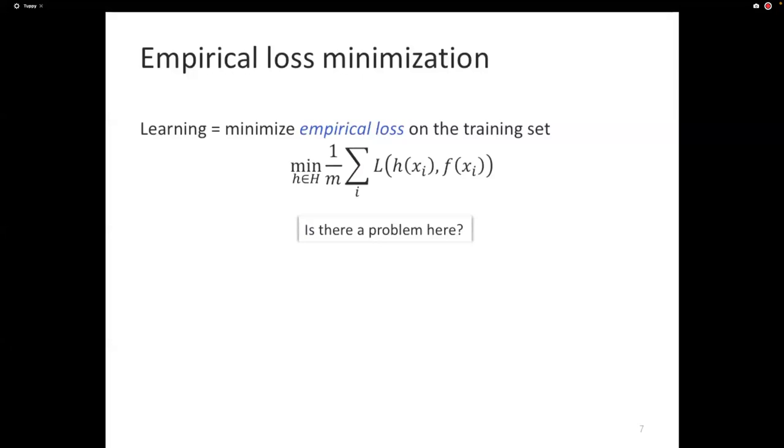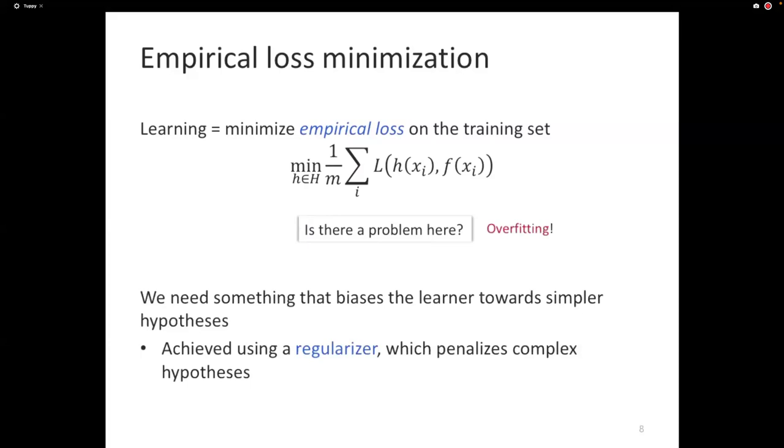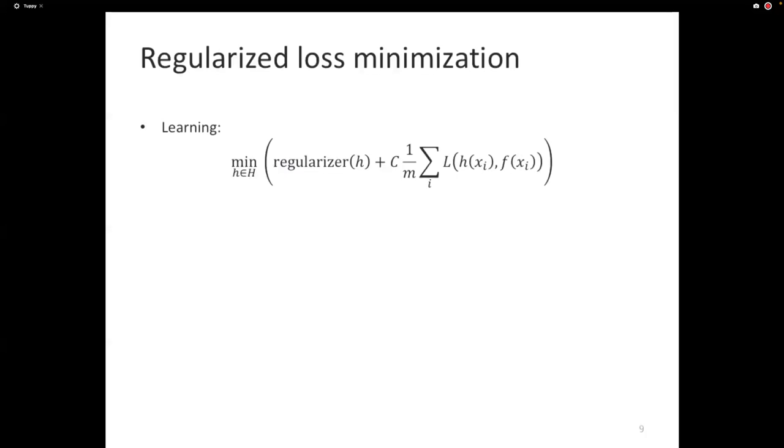It's going to be zero training error. The minimum empirical loss without any other considerations is going to be zero. So this thing can overfit. So we need something that penalizes complexity. The expression that penalizes complexity in this literature is typically called a regularizer. So we have a regularizer that can penalize complex hypotheses. So rather than just minimizing the empirical loss, we have the problem of minimizing the regularized empirical loss.